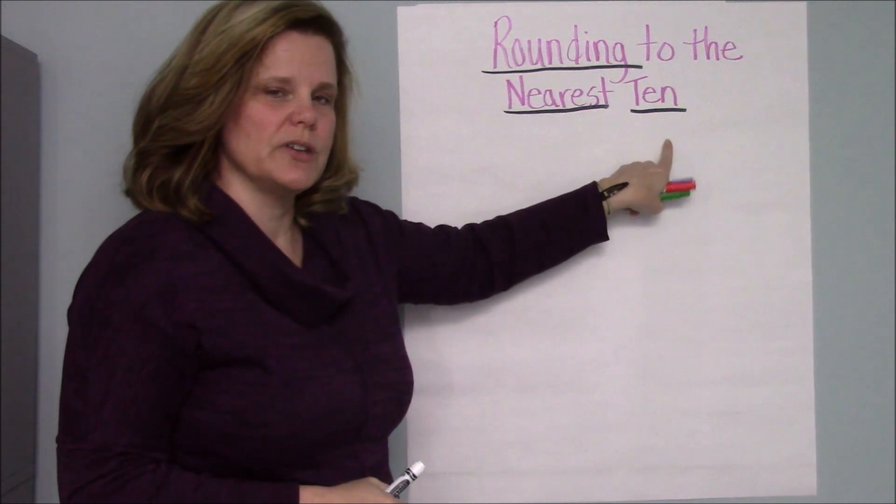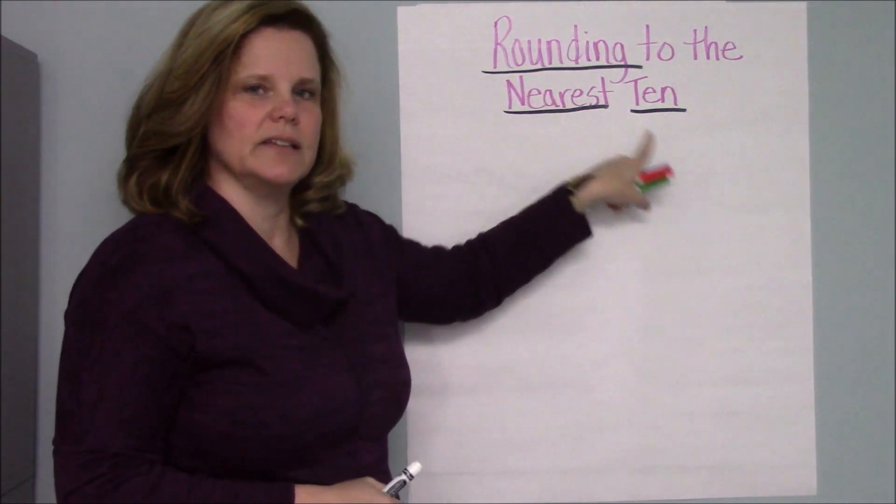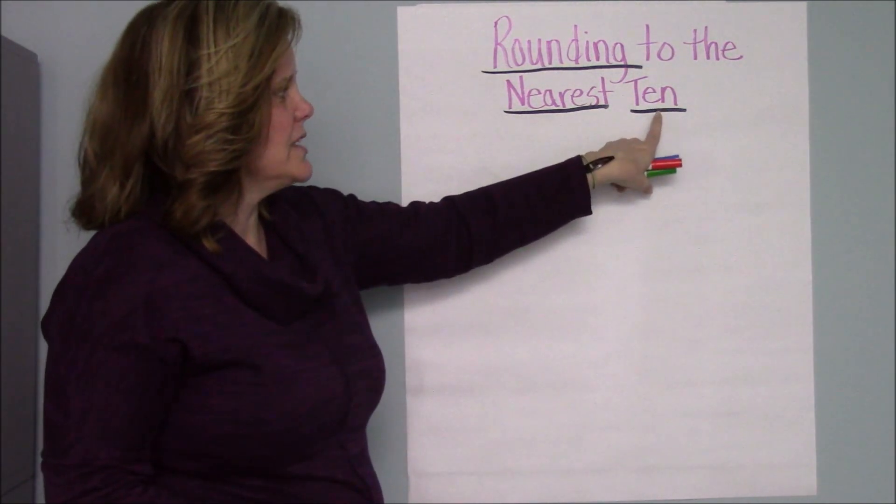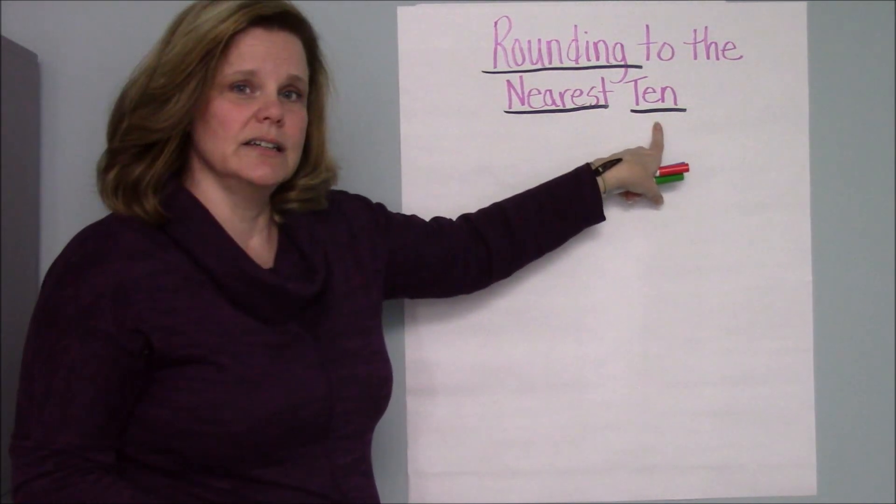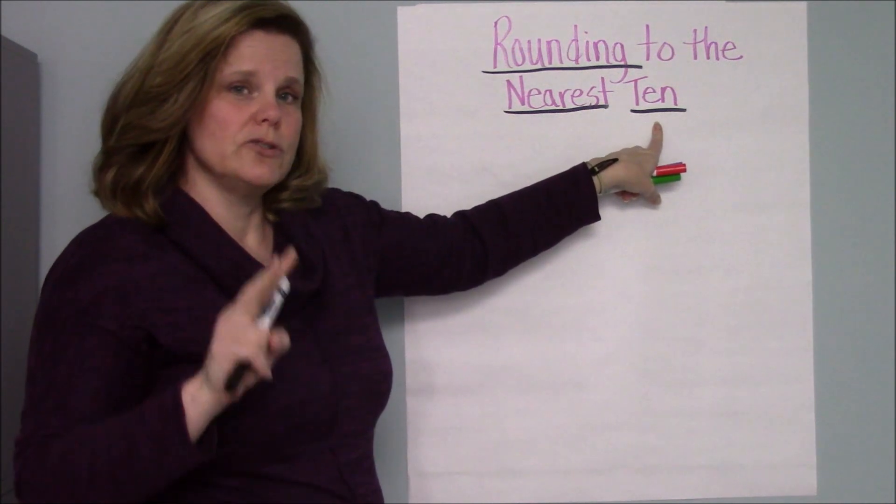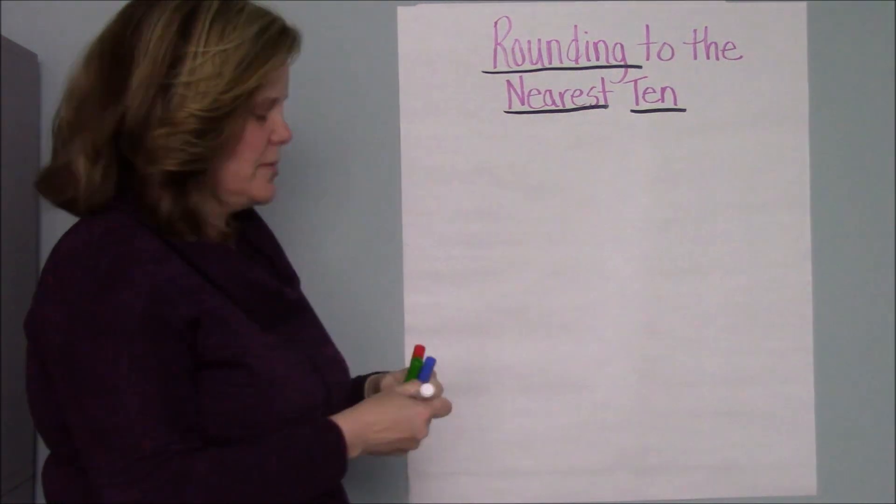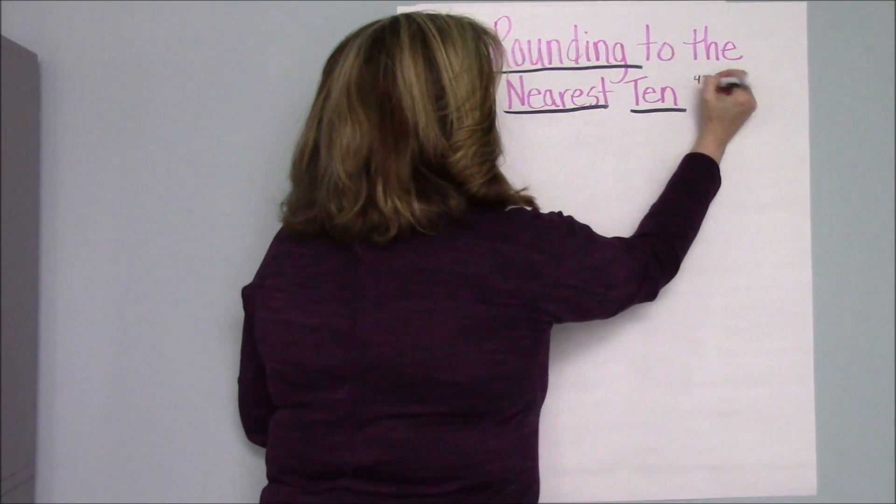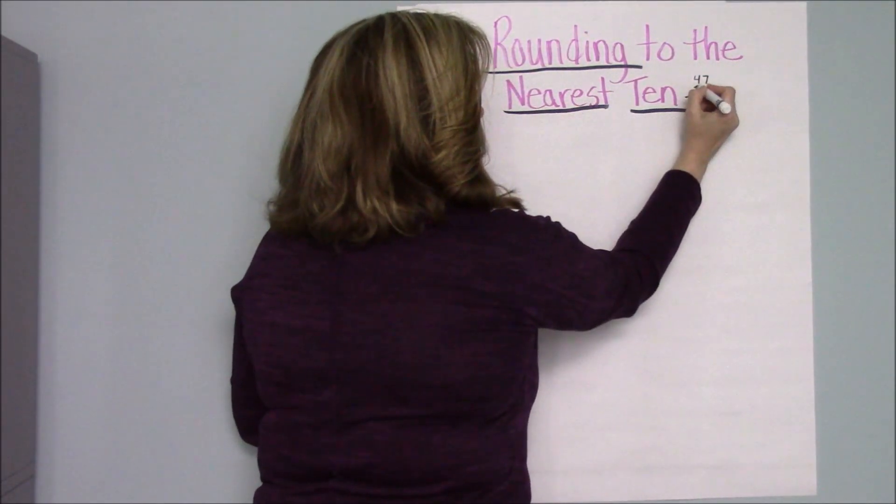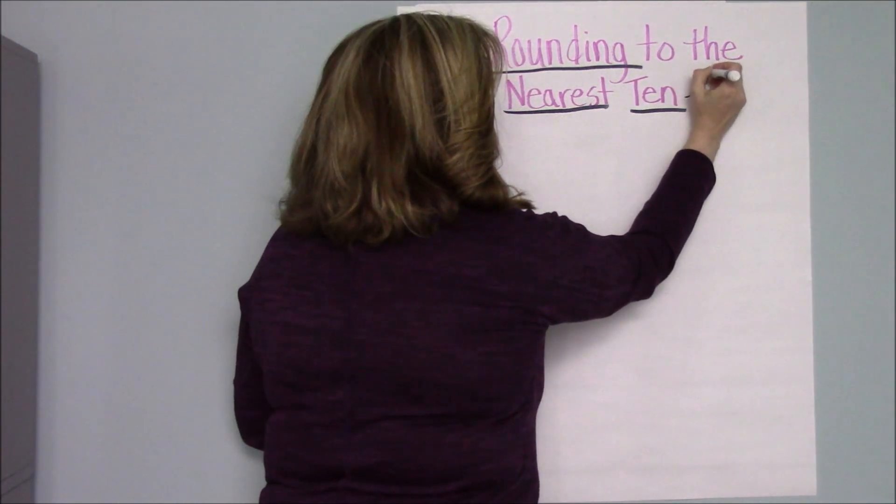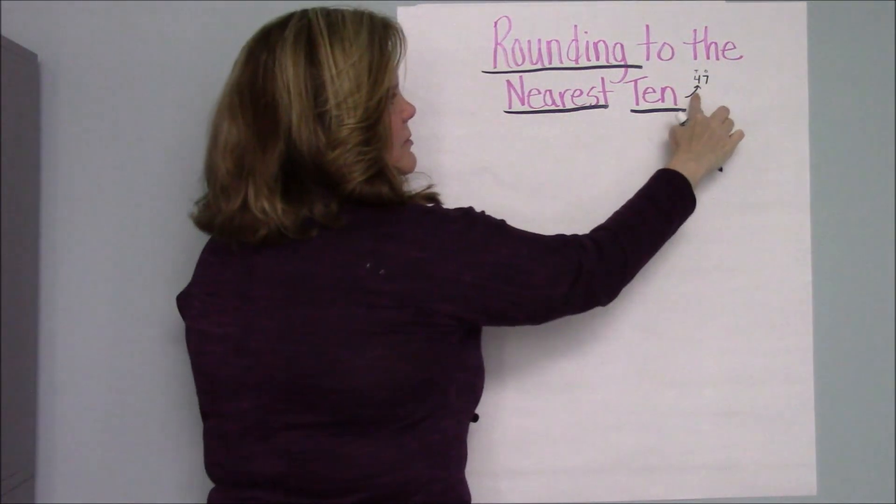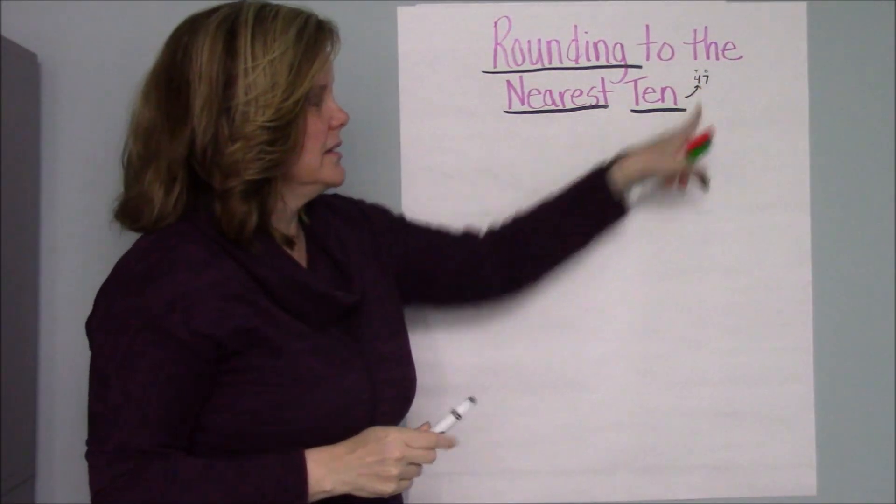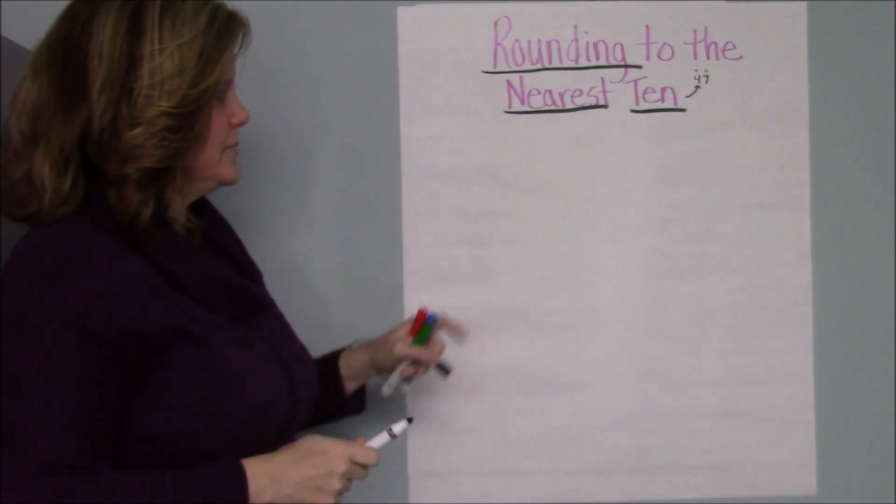And we're going to round them to the nearest ten. So remember in math we've been talking about ones, tens, hundreds, our place value language. The tens mean there's two digits. So when we talk about to the nearest ten, if let's say I have my number 47, then my ten is going to be the one in the second spot. So remember that number, these are our tens.